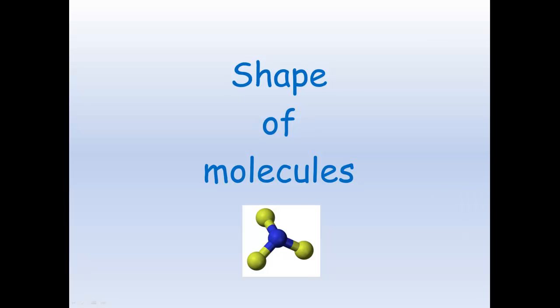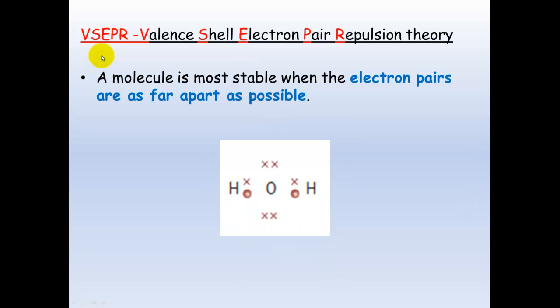Shapes of molecules: the Valence Shell Electron Pair Repulsion theory, basically known as VSEPR. What this is saying is that electron pairs, because they're negatively charged, will move as far apart from each other as possible.